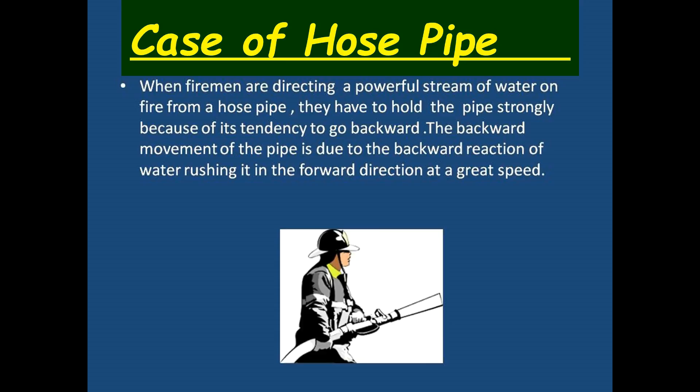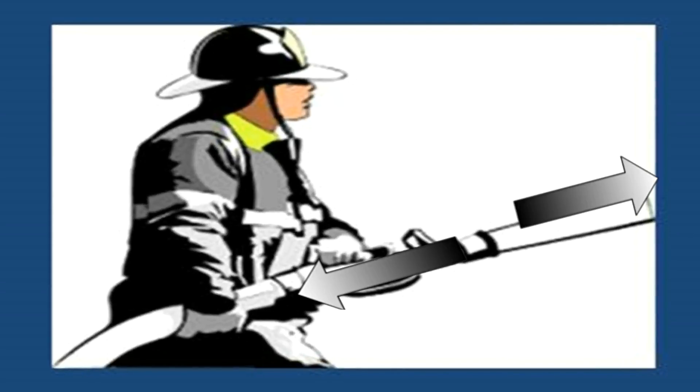The first case is a hose pipe. When firemen are directing a powerful stream of water, they have to hold the pipe strongly because the high-speed stream of water rushing out from the pipe exerts a backward pressure on the hands of the man. This is due to the high speed of the water stream rushing out of the pipe, which exerts a reaction in the backward direction.